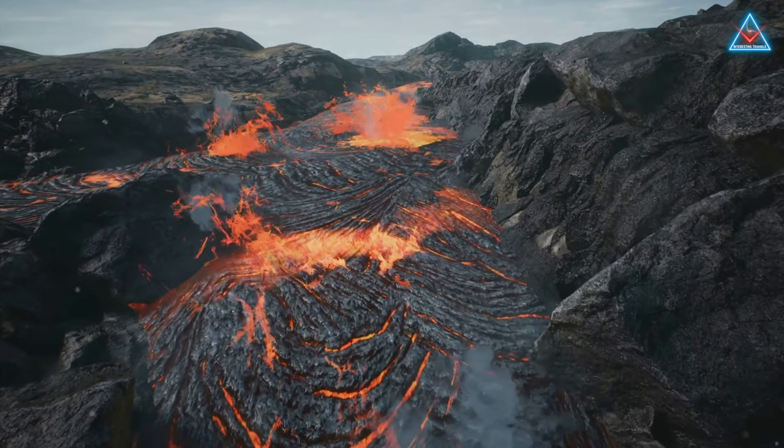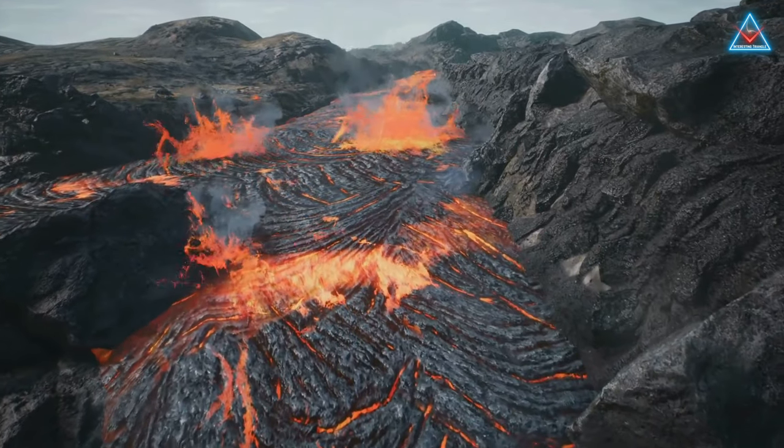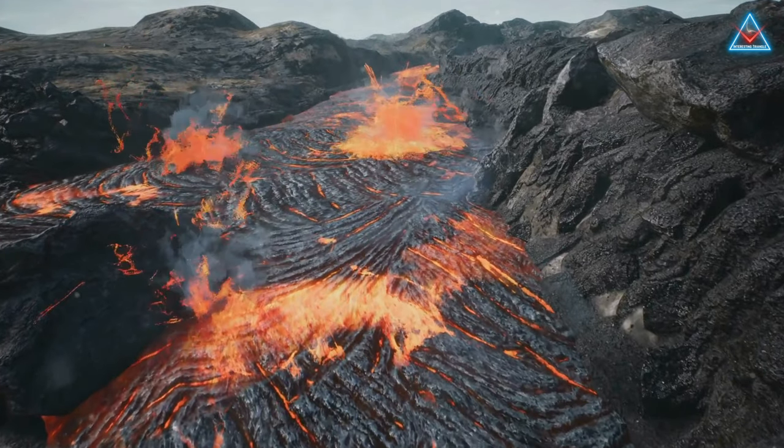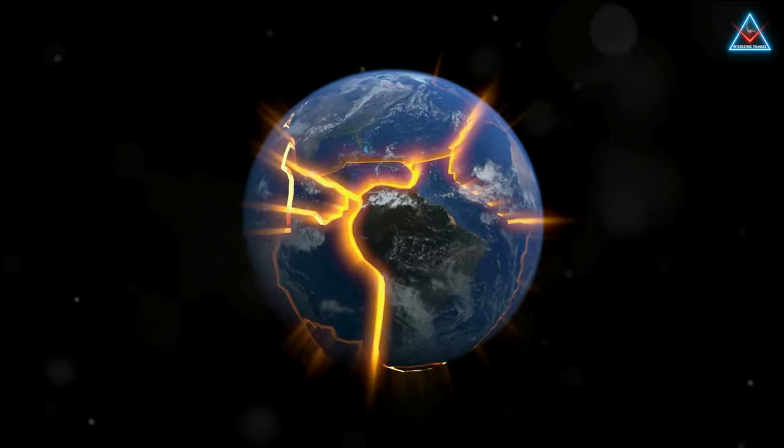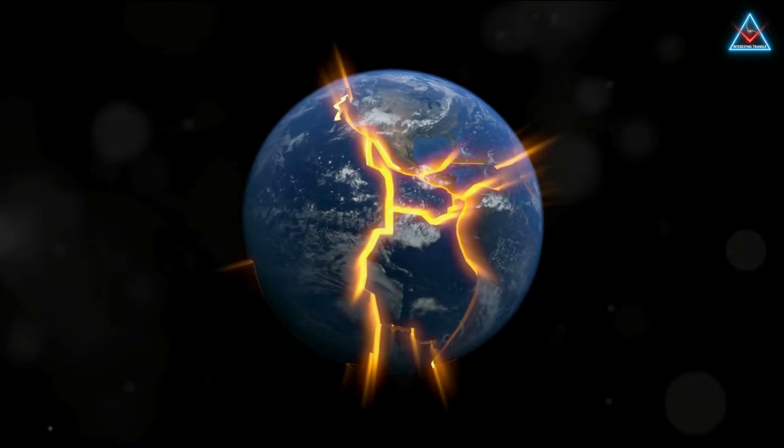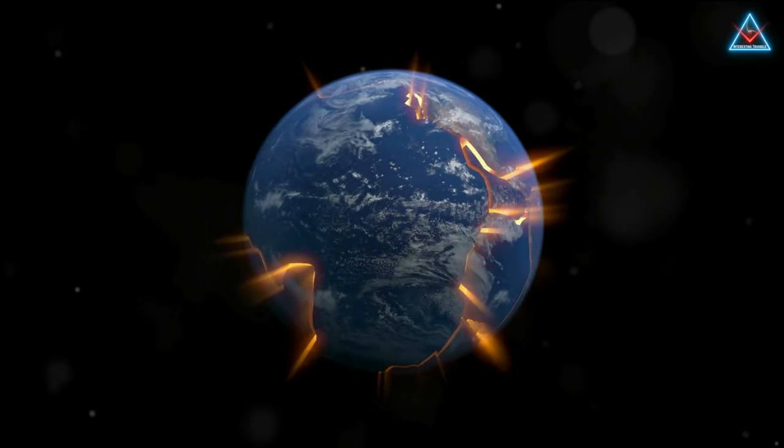Next we descend into the mantle. It's not just a layer of rock, it's a hot, flowing layer of rock, reaching temperatures of up to 7,200 degrees Fahrenheit. It's this heat that drives the motion of tectonic plates, causing earthquakes and volcanic activity.